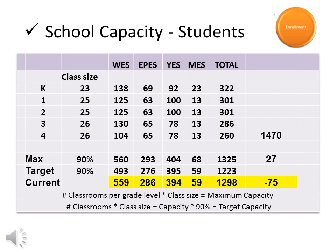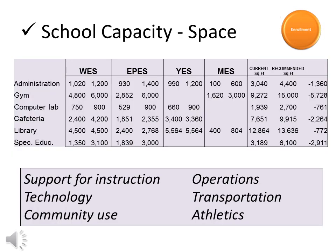Ideally, space issues are addressed when the numbers reach the target area. Our current elementary enrollment exceeds the target capacity by 75 students. The facility study also reviewed the district's classroom and program support spaces, such as gyms, administration, cafeteria, library, and special education needs. Several support areas are significantly undersized. In addition, the district-wide operations and maintenance, technology support, and other departments are feeling the strains of increasing enrollment.